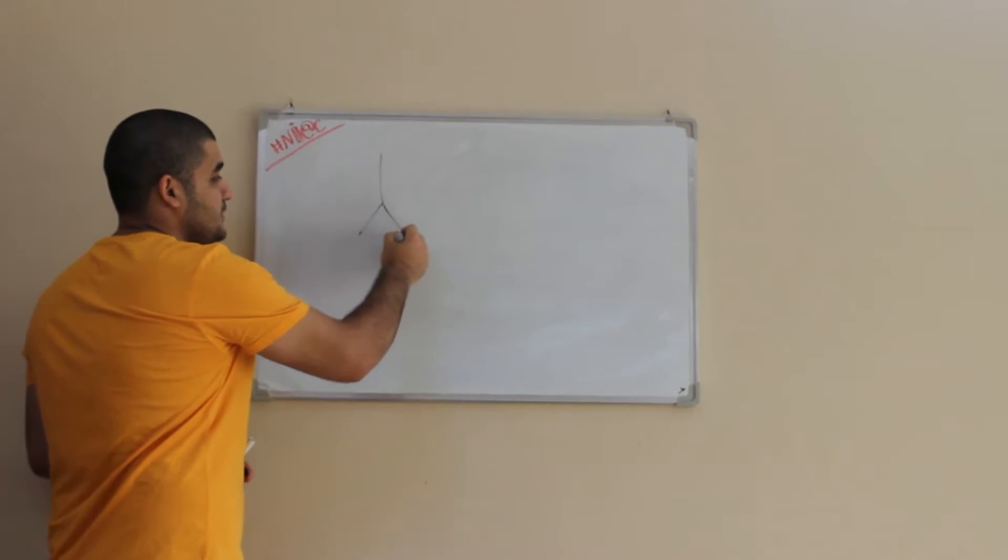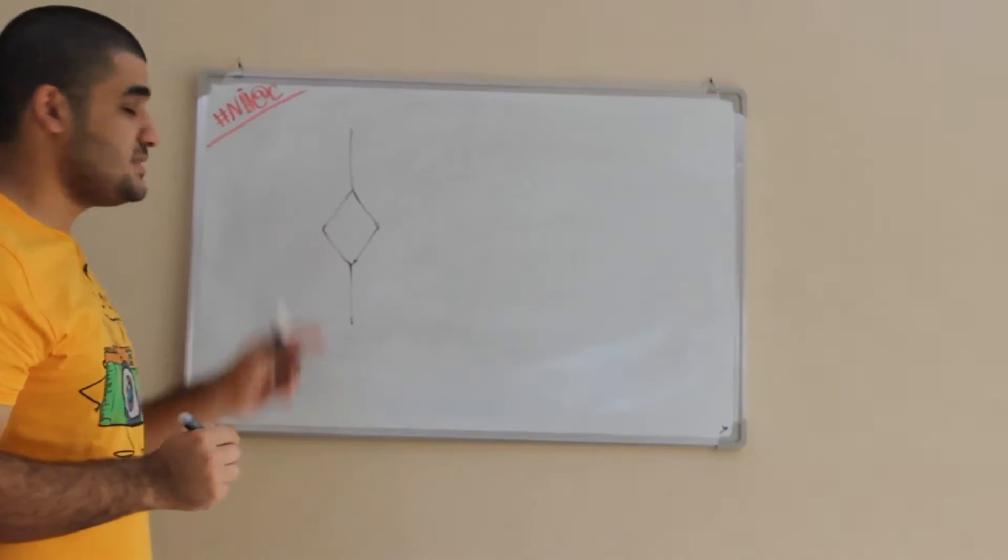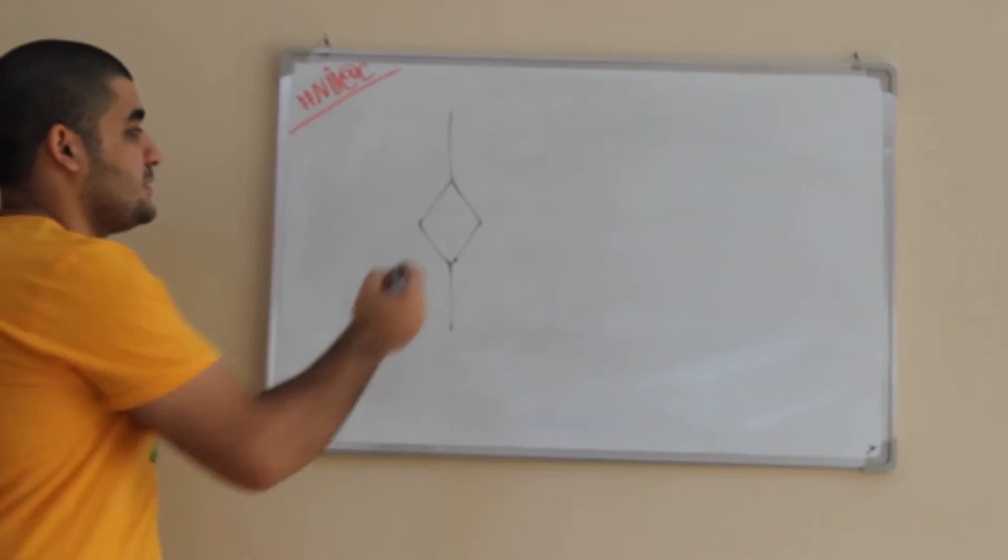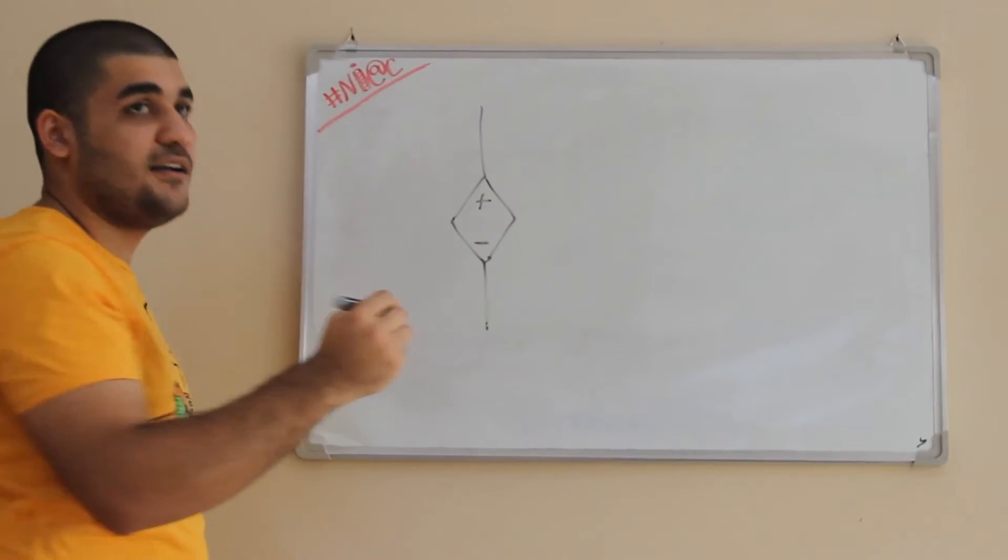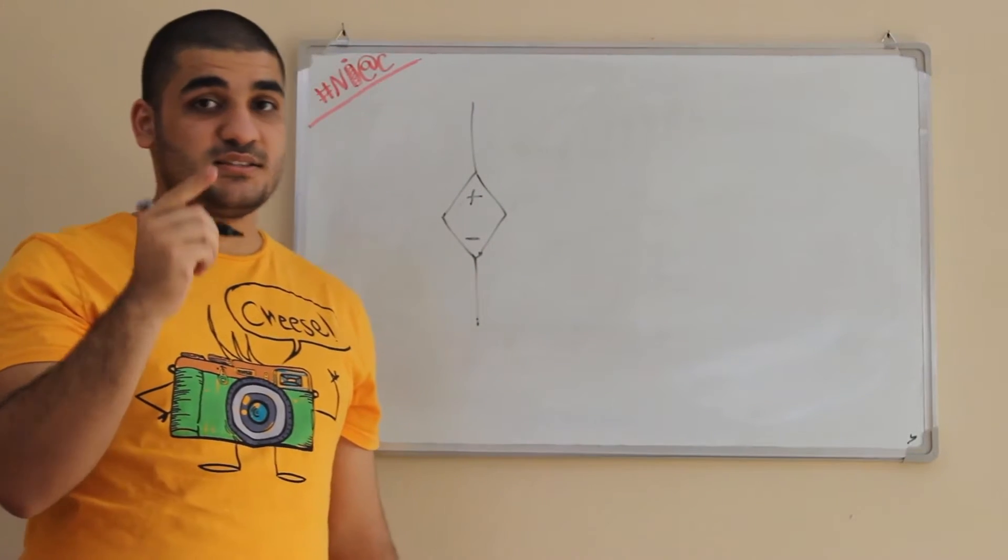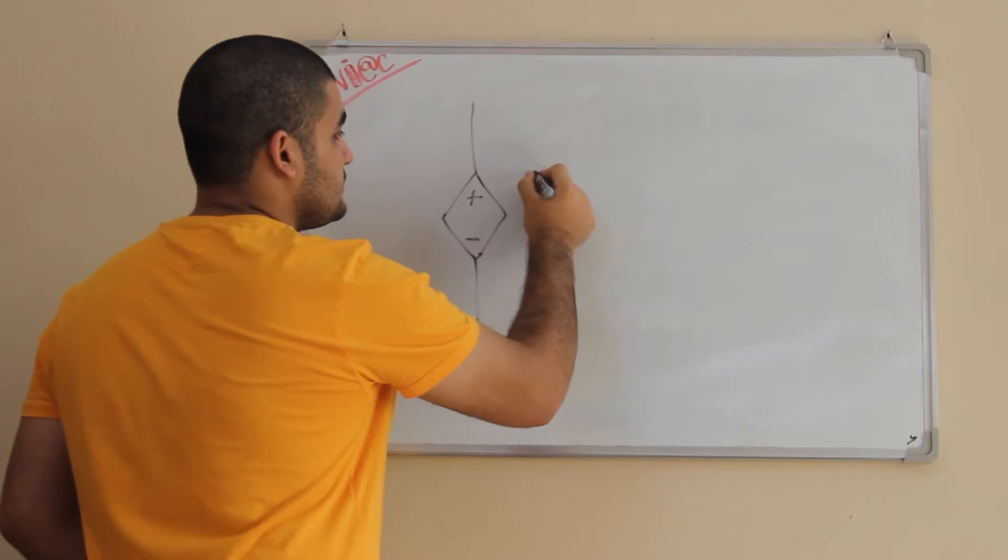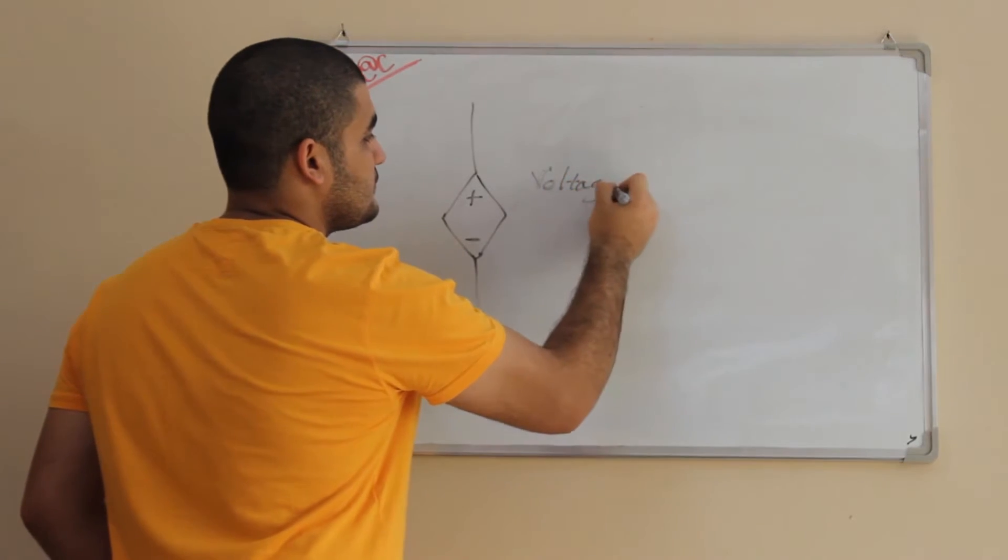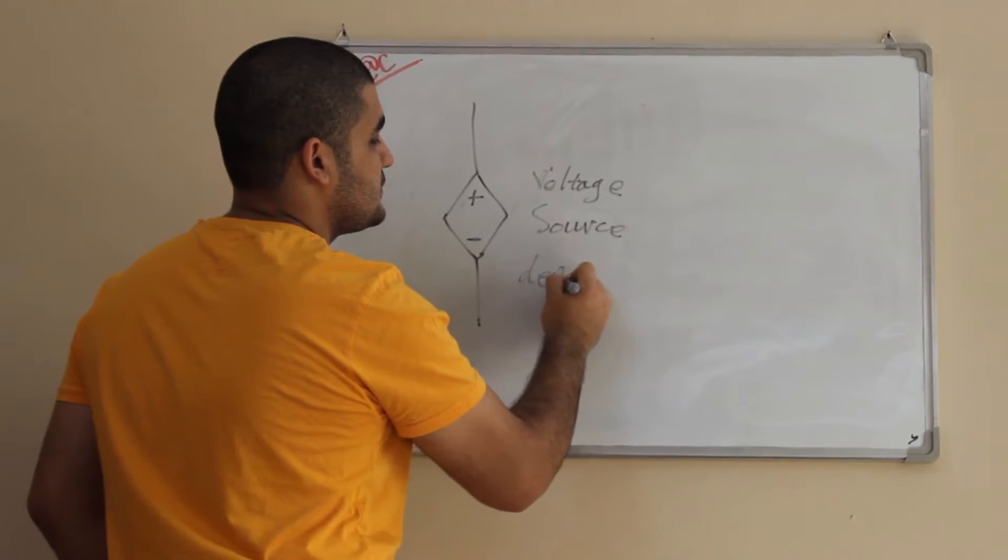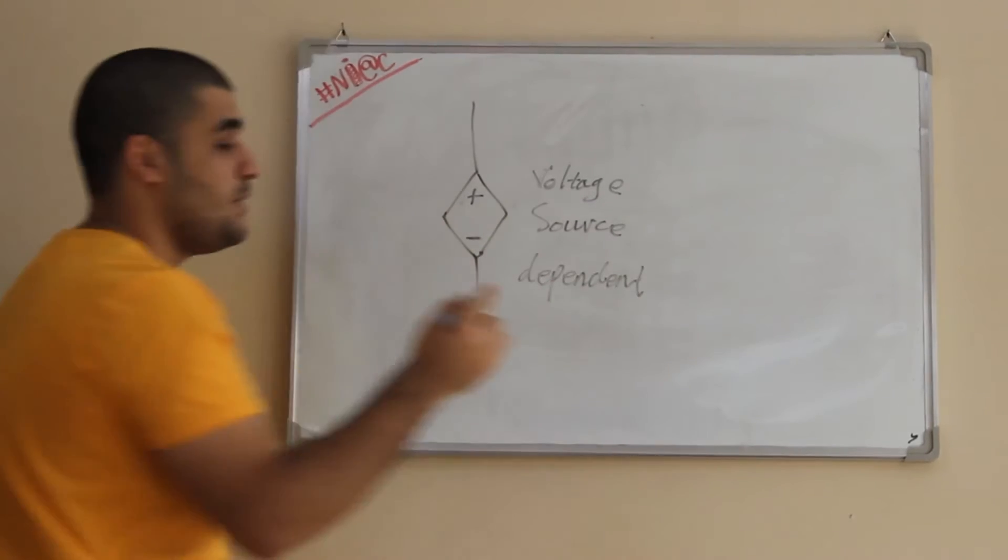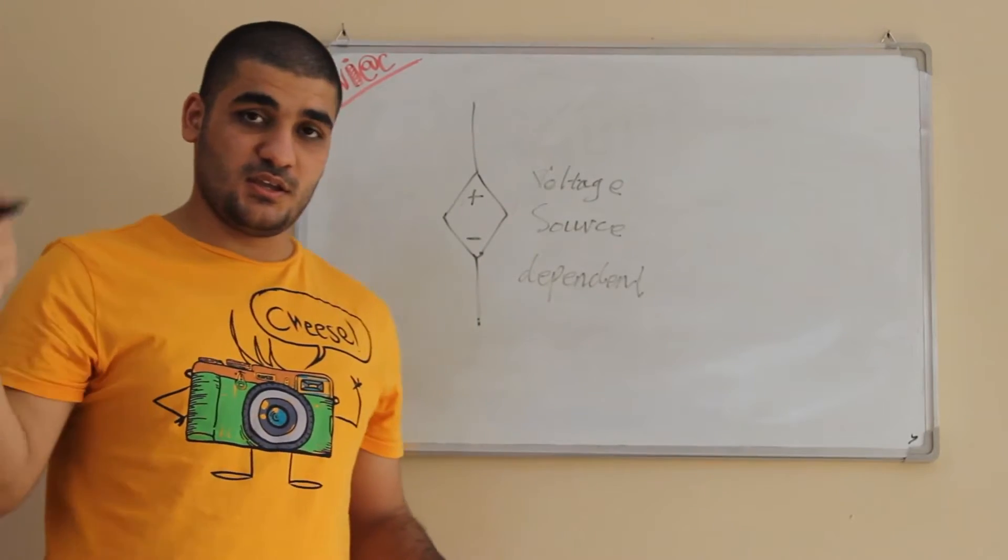Whenever you see this symbol in a circuit with these signs inside this box, this is a voltage source, but this is a dependent voltage source. What is dependent? Remember the last one was just a circle with the same sign, but it was independent.